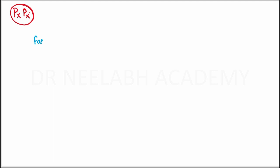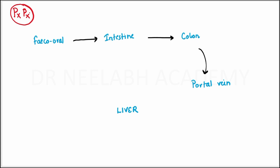Pathophysiology. This organism enters our body through the feco-oral route, which is the most common form. It enters the intestine, then the colon, and finally via the portal vein to the liver. The feco-oral route is the most common form through which the quadrinucleate cyst enters our body.